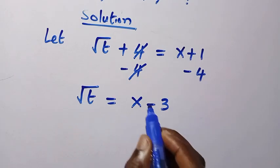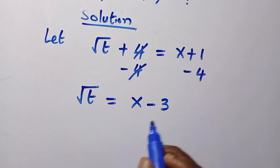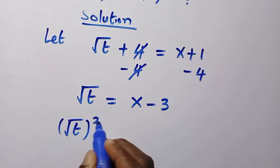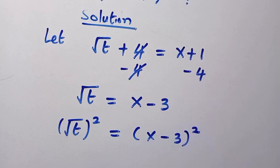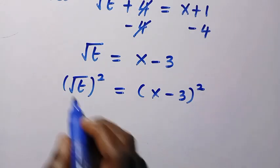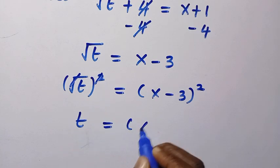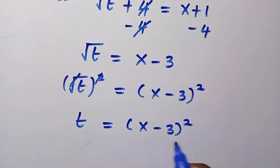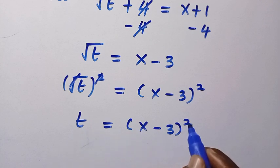Here we have √t equals x minus 3. To get only t, we are going to take the square of both sides. By squaring both sides, we have √t squared equals (x - 3) squared. Square and square root cancel, so we have t equals (x - 3)². We have established t, making t the subject of this relation as (x - 3) raised to power of 2.